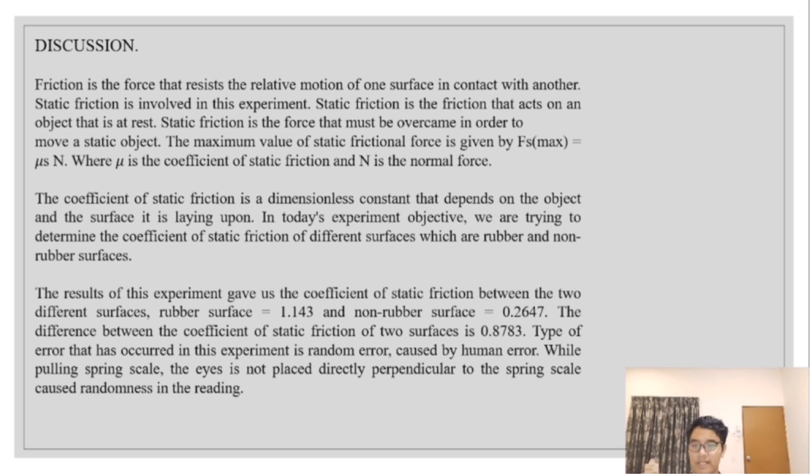In today's experiment objective, we are trying to determine the coefficient of static friction of different surfaces which are rubber and non-rubber surfaces. The result of this experiment gave us the coefficient of static friction between two different surfaces. The surface gave us 1.143 and non-rubber surface gave us 0.2647. The difference between the coefficient of static friction of two different surfaces is 0.8783. The type of error that has occurred in this experiment is a random error caused by human error. While pulling the spring scale, the eyes is not placed directly perpendicular to the spring scale causing randomness in the reading.